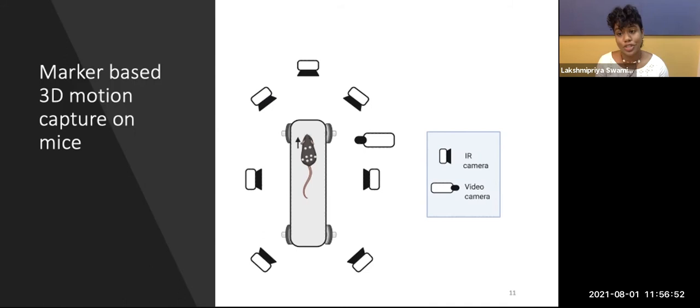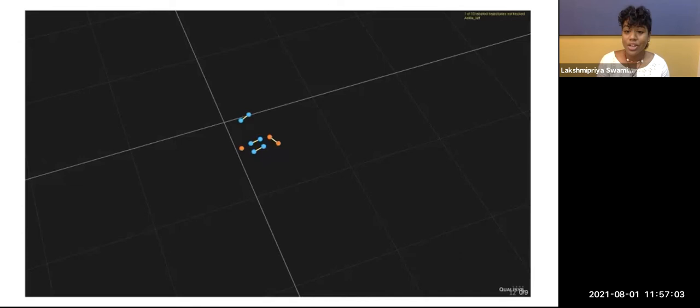By observing the mice using the 3D motion capture system as they locomote on a treadmill, I obtain highly resolved 3D movement trajectories. Here, you can see a 3D reconstructed video from one of my experiments.